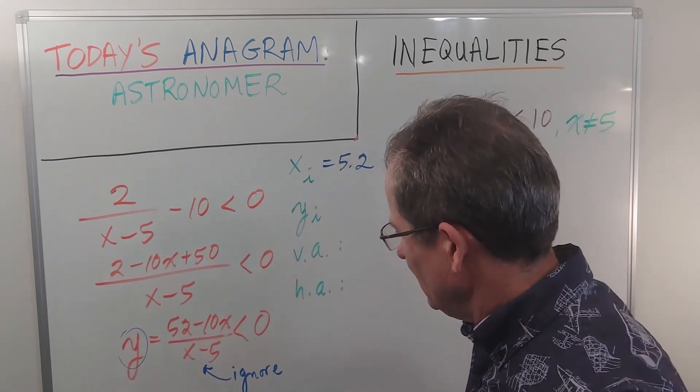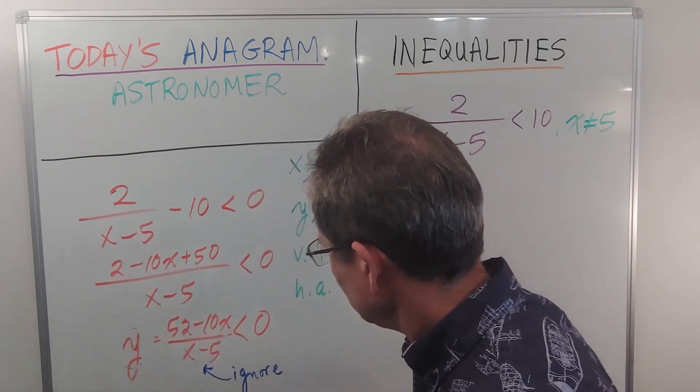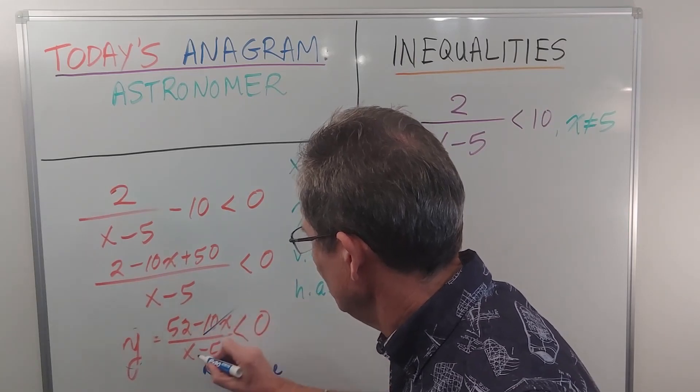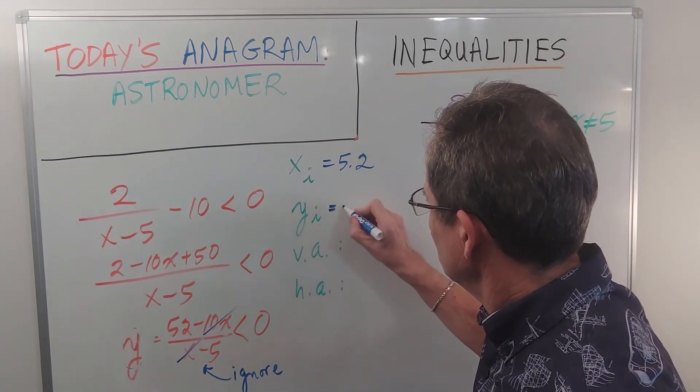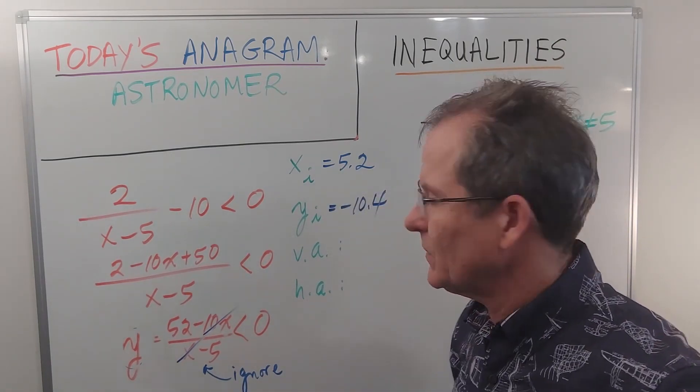Now to get the y-intercept, you let x be zero. So you put zero here, so that's gone. You put zero here, so that's gone. So you have 52 over negative 5, which is negative 10.4, I believe. Yeah, that's right.